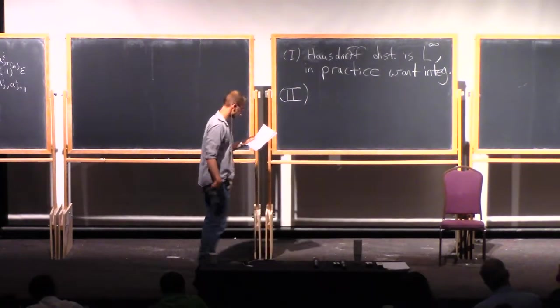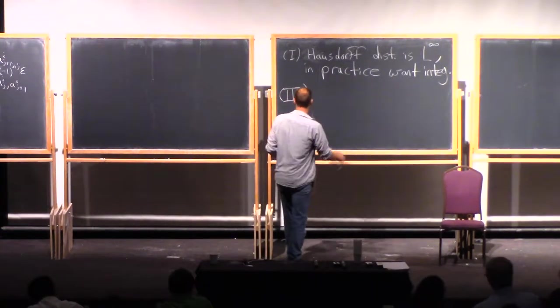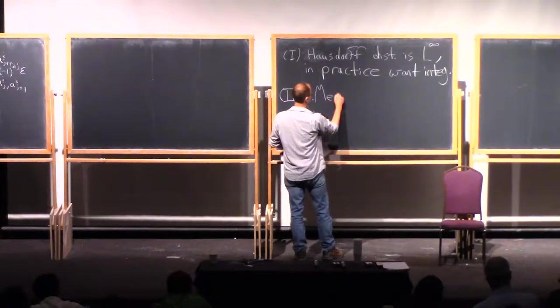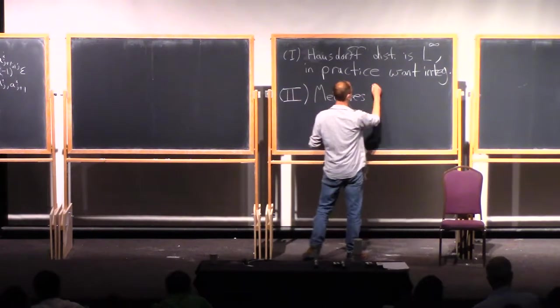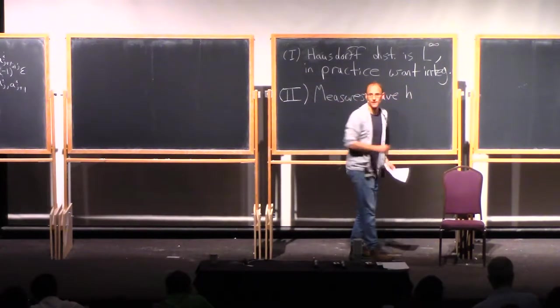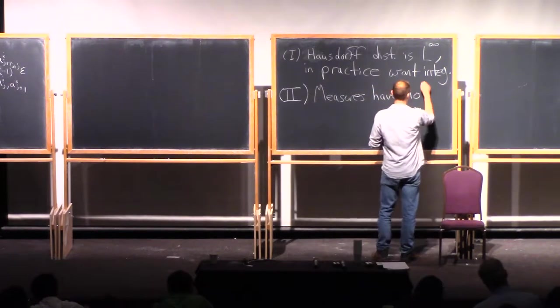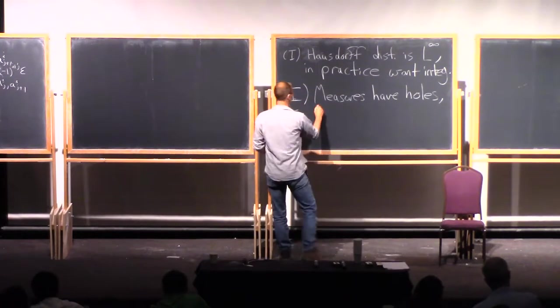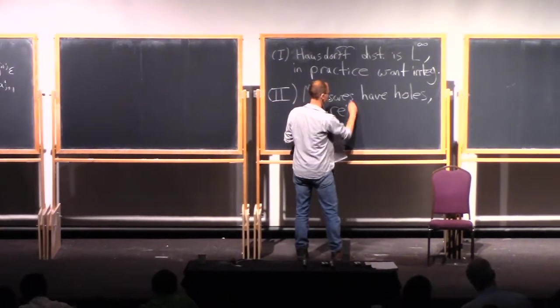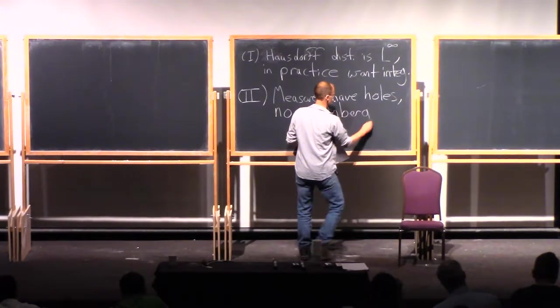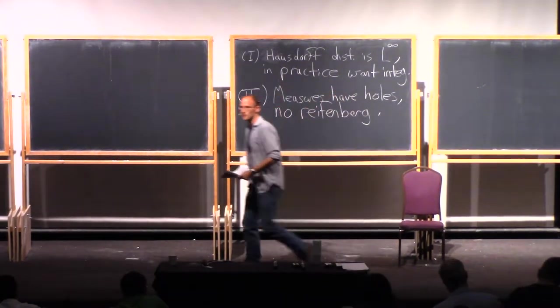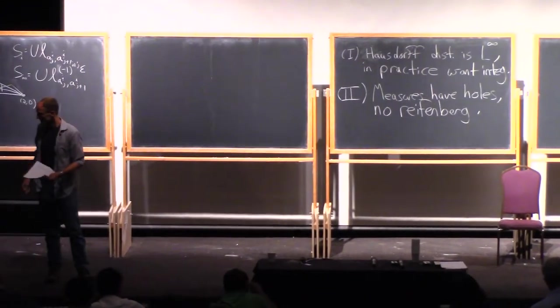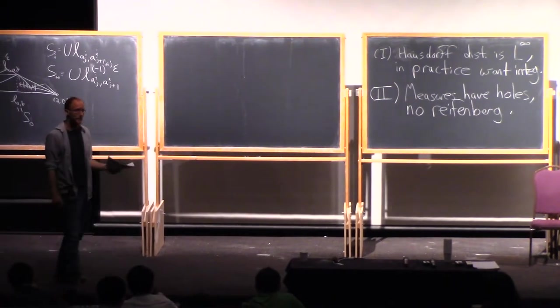Second problem. In applications, our sets or our measures, which are supposed to be like singular sets of things in practice, the measures have holes. Actually, more to the point, they simply don't satisfy the Reifenberg condition, which is to say, you know, it's not a question of holes or not holes, you just don't have a Reifenberg condition.